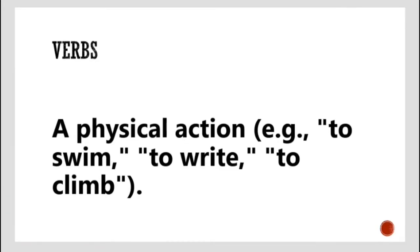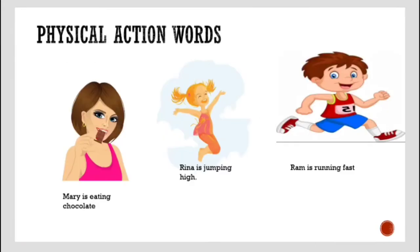Here are some pictures of physical actions. The first picture: the girl is eating chocolate — Mary is eating chocolate. Eating chocolate is also a physical action, as she is using her mouth and hand. Second, Rina is jumping high — again physical action, body movement is there. Ram is running fast — again physical action with body movement.